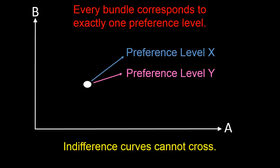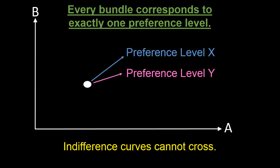So all together, we conclude that this bundle has preference level of x and also has preference level of y. But this, however, contradicts what we assumed in the first place, which is that every bundle can correspond only to exactly one preference level.